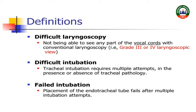Difficult endotracheal intubation kya hota hai? According to the American Society of Anesthesiologists, difficult endotracheal intubation means proper insertion of the tracheal tube with conventional laryngoscopy requires more than 3 attempts or more than 10 minutes. Tracheal tube insert karne mein more than 3 attempts ya 10 minutes se zyada lagne ki situation ko difficult endotracheal intubation kehte hain — chahe different blades bhi use kar raha ho, patient ko intubate nahi kar pa raha.